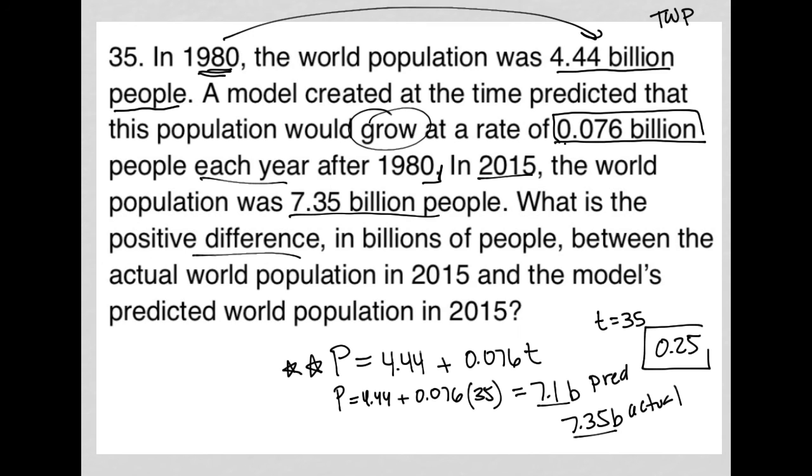So our answer here will be 0.25 billion people. That should be our answer because it does say in billions, right? So there would be no need to actually convert this to billions. You wouldn't have the space on the test to type in that large of a number anyway. The question does say in billions, so 0.25 is correct. Thank you.